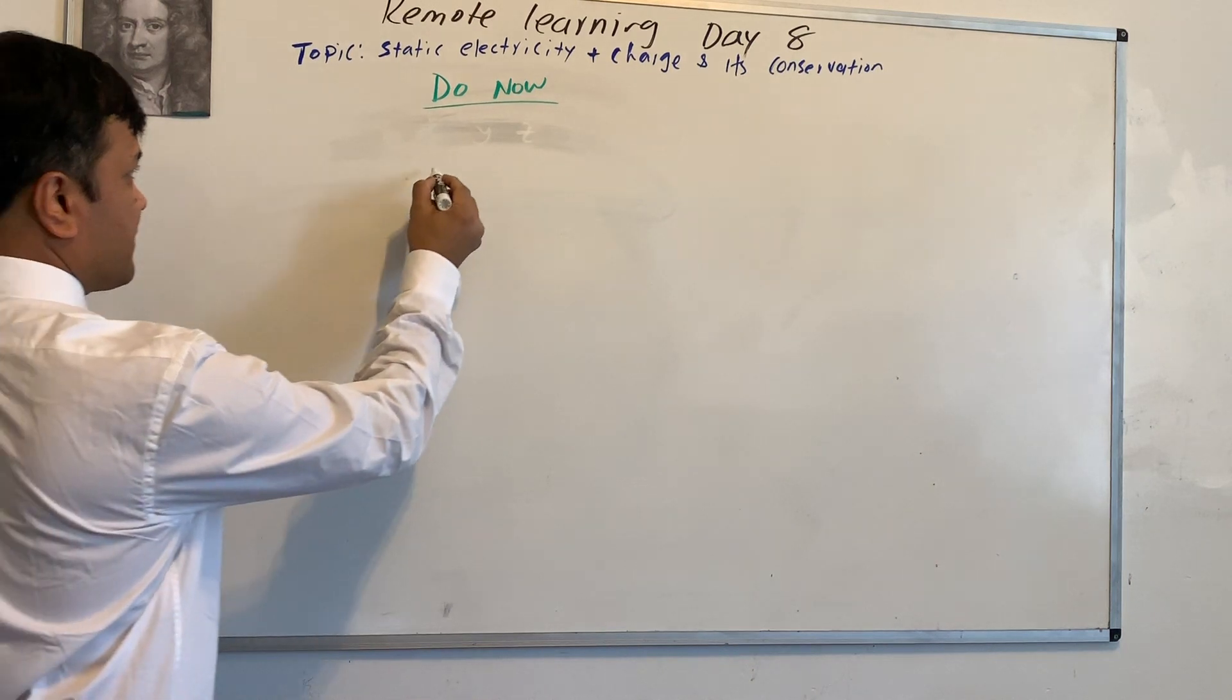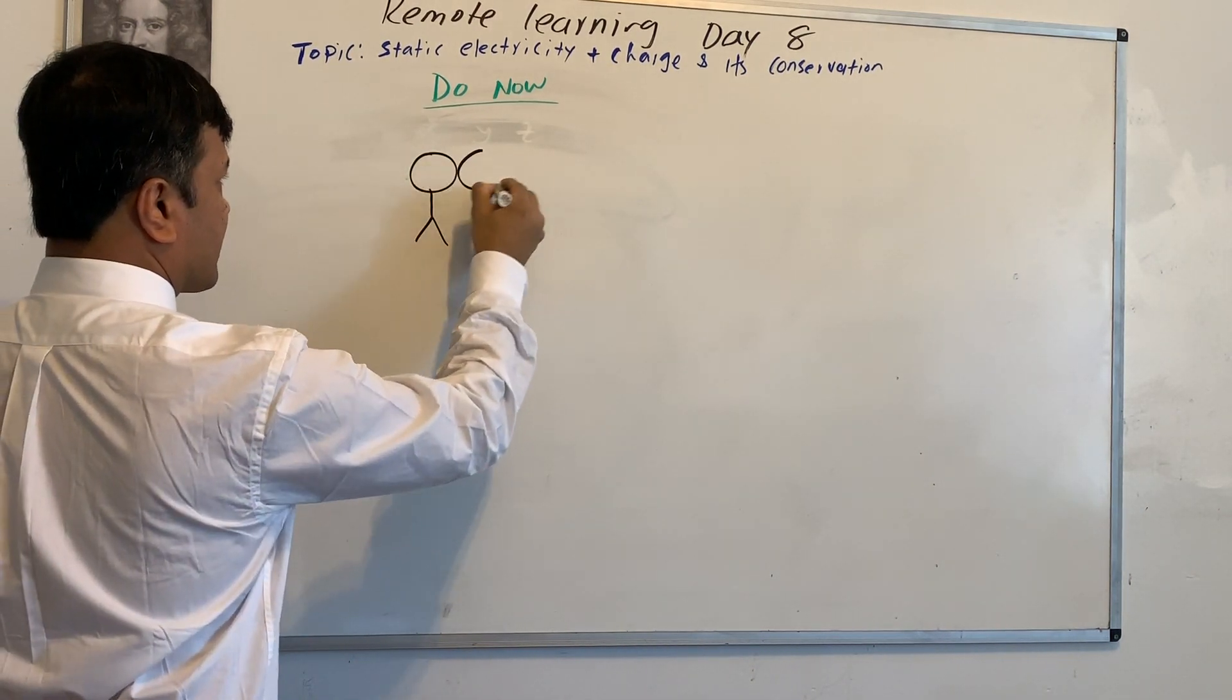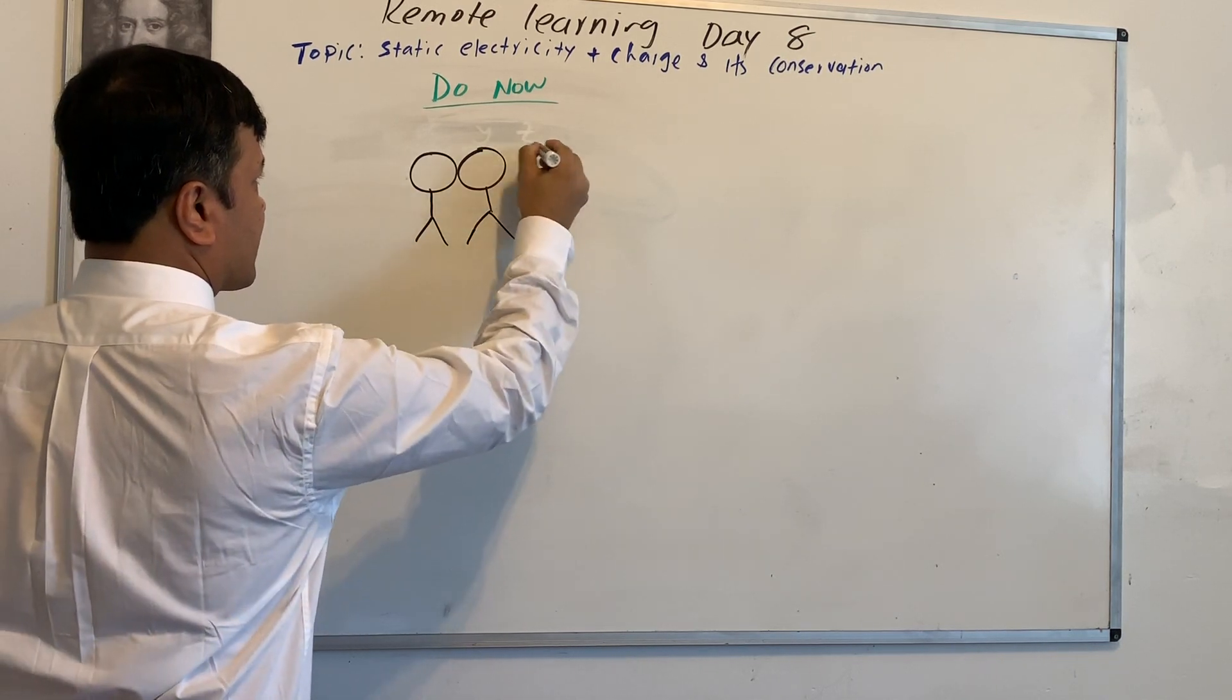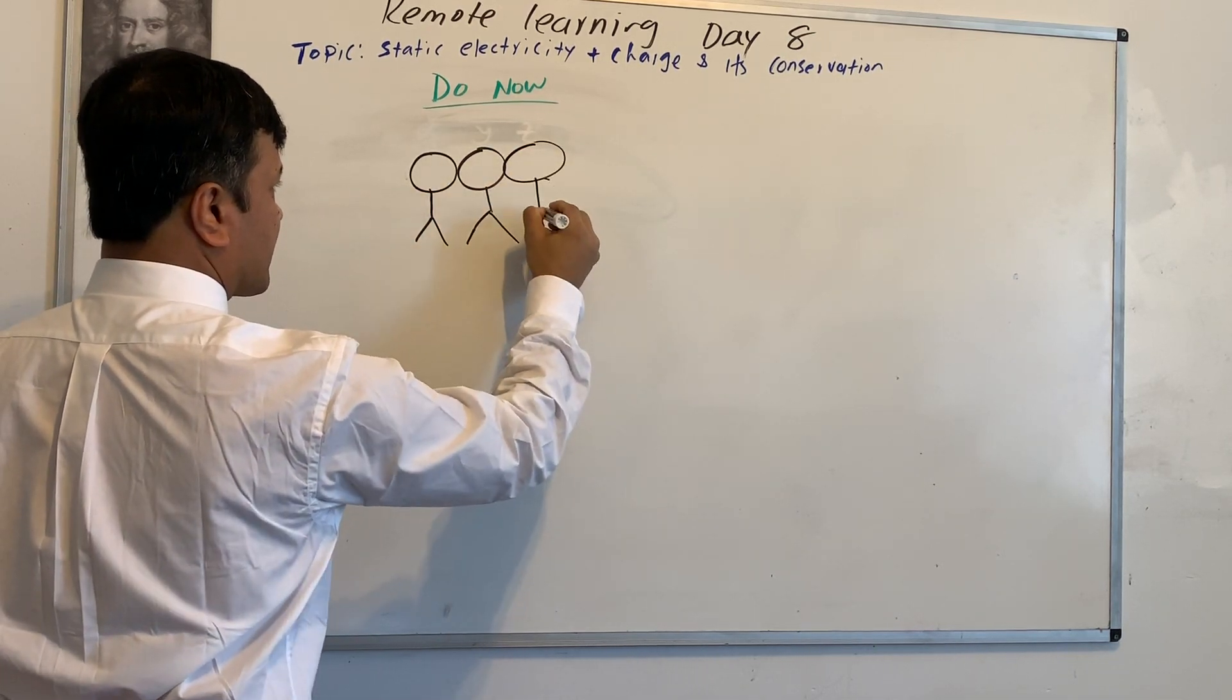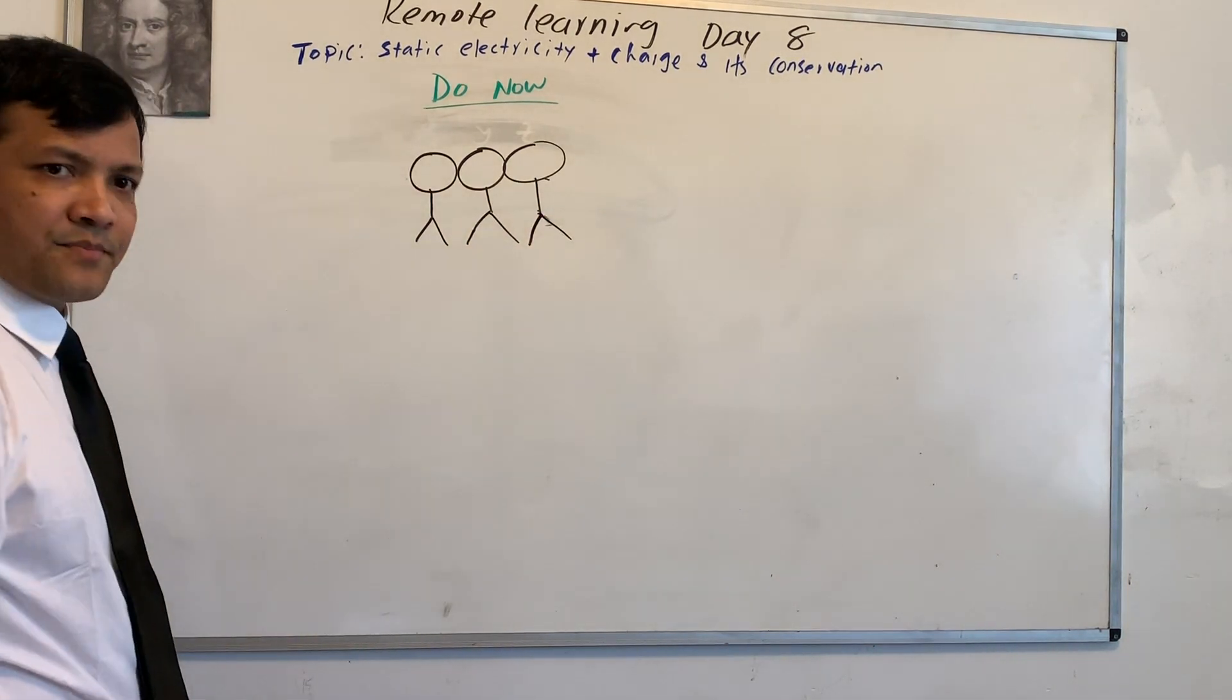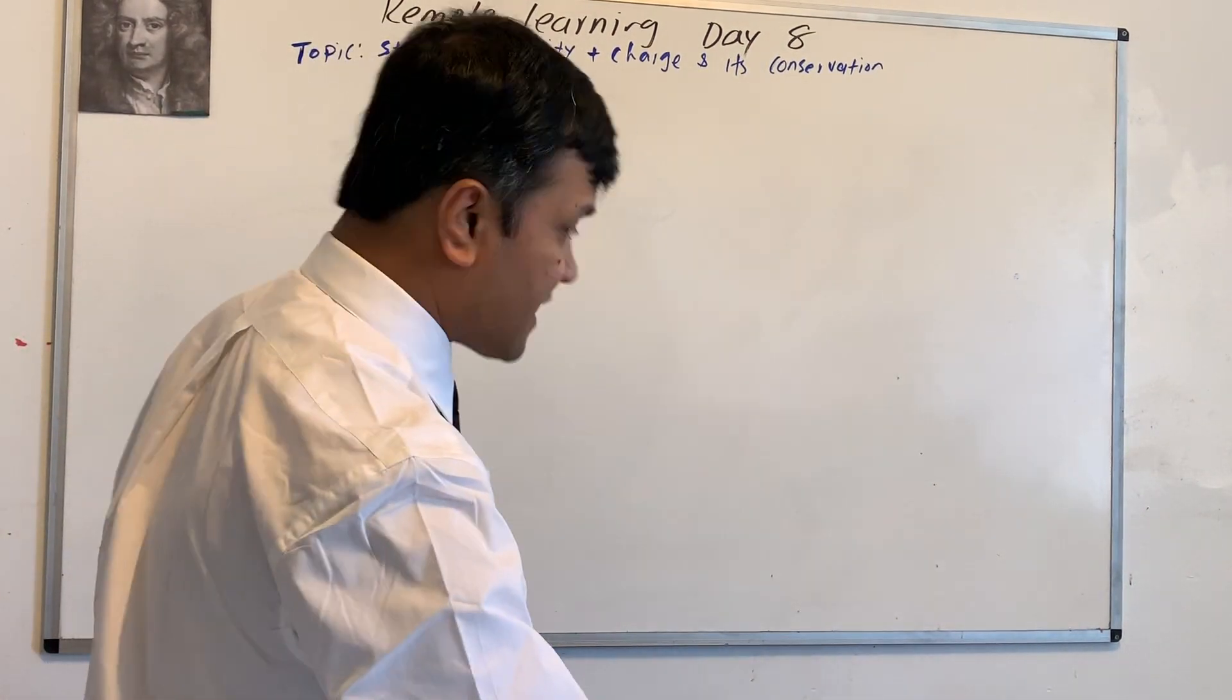I'm going to give you three metal spheres. These three metal spheres, they are touching each other. I'm going to call them X, Y, and Z.